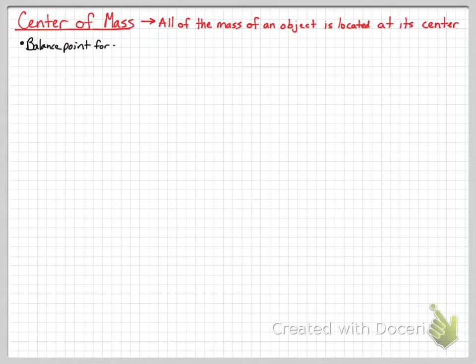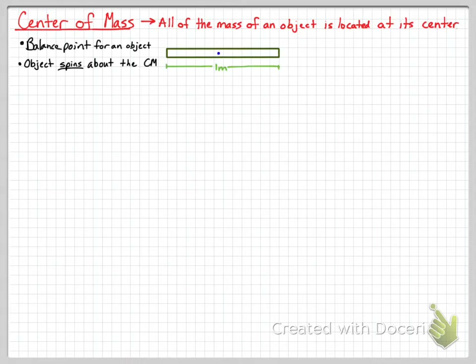The other important things about center of mass: it's the balance point for an object, and the object rotates or spins about its center of mass. For most things we deal with in physics, the object's center of mass will fall right at the center of the object. So if we take a meter stick that is one meter long, its center of mass should be 0.5 meters away from the edge — right in its center.